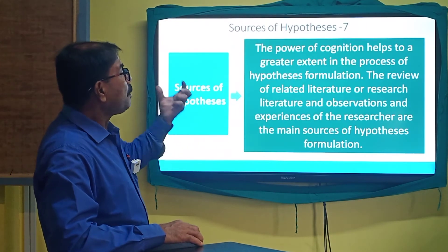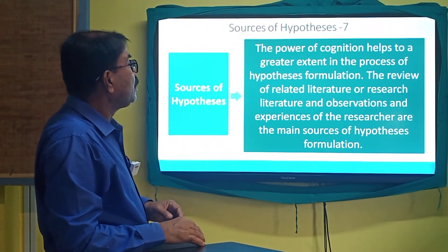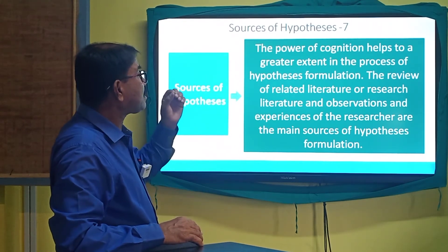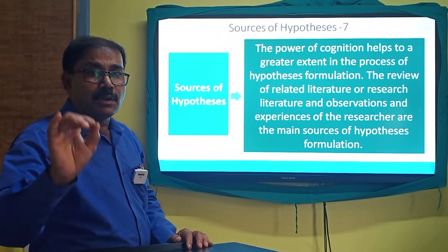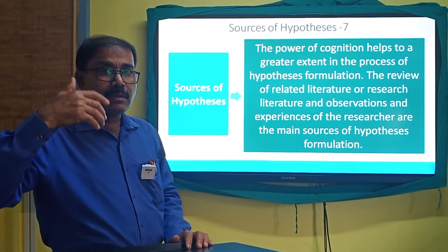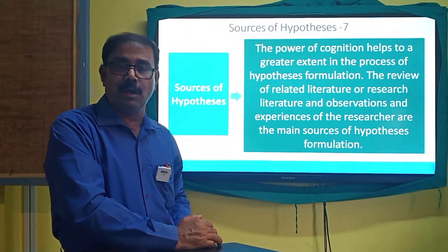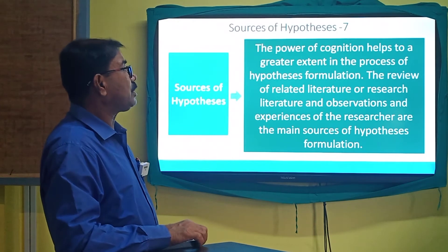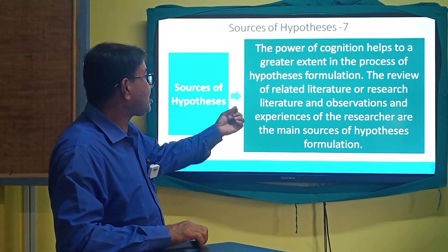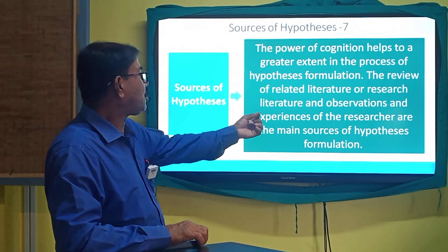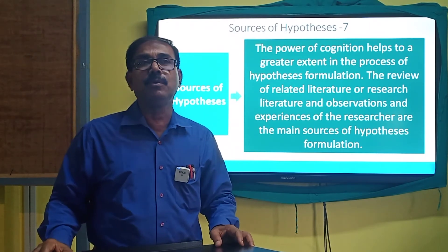The power of cognition — meaning the power of understanding — helps to a greater extent in the process of hypothesis formulation. Your intuitive power, your insight, your cognitive power, your experiences, your knowledge, and your volume of study are the sources on which you are to depend for the formulation of your hypothesis. The review of related literature, and observations and experiences of the researcher, are the main sources of hypothesis formulation.